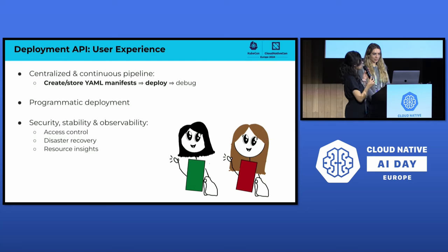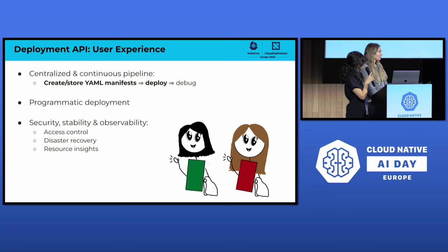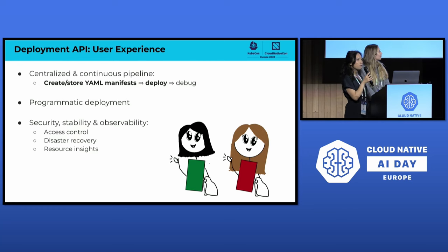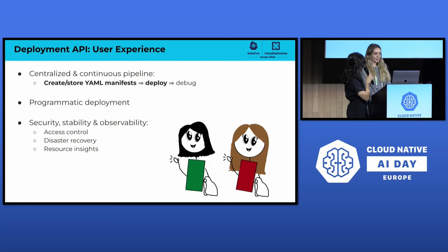Coupled with the debugging UI, adding the deployment API to the platform ensures a centralized and continuous inference pipeline — from creating YAML files, to deploying them into services, to debugging and monitoring service statuses. This API also allows users to perform programmatic deployment by calling the API directly in a workflow without ever touching kubectl. Throughout the design, we've incorporated key principles: managing access control, handling disaster recovery, and exposing resource insights.